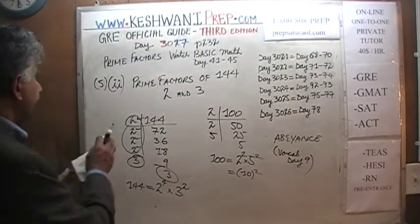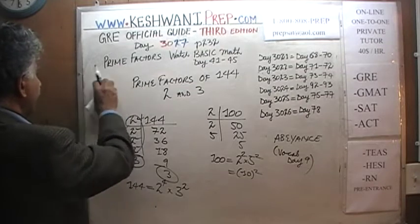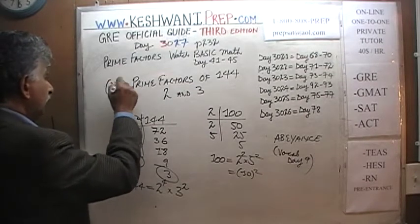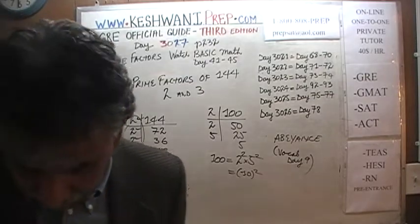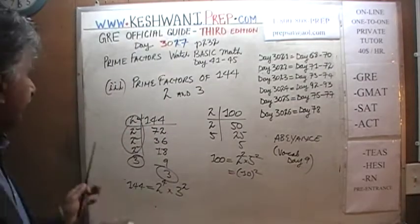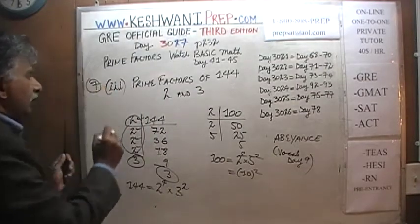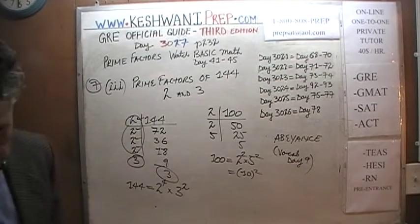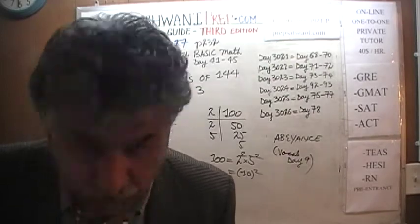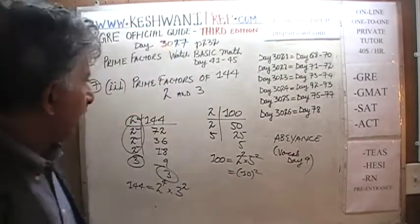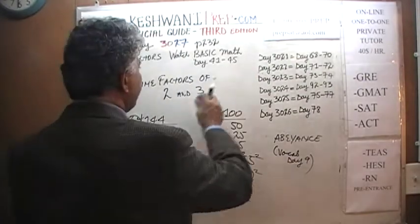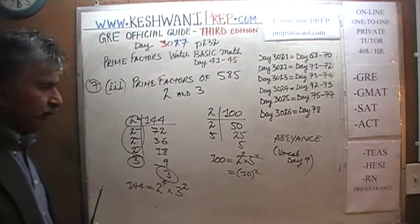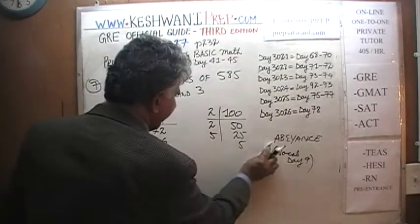Let's do one more — part 3. What I'm calling part 3 is actually problem number 7. In problem number 7, skipping problem 6 for now, they're asking us to find the prime factors of 585. Let's do it right here.